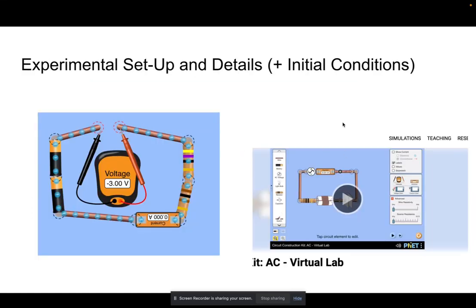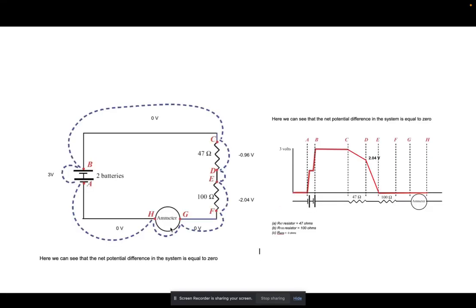This is our experimental setup. We used the simulation, as you can see on the right here, and then we created a circuit and measured the potential difference over the circuit, as you can see from this image here, as well as the amps flowing through the circuit. We were able to model the system with two batteries, a 47-ohm resistor, and a 100-ohm resistor to measure the amperage flowing through the system and the potential difference.